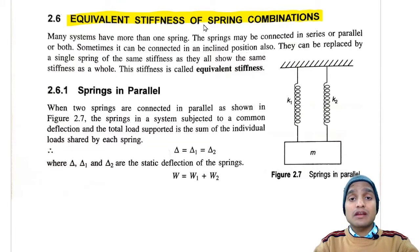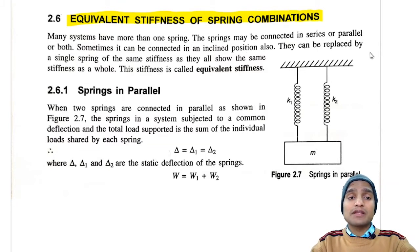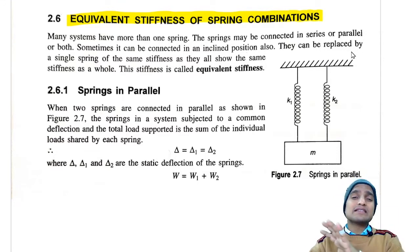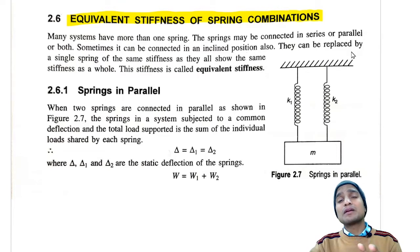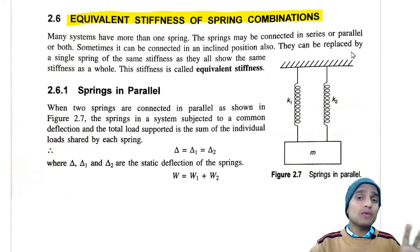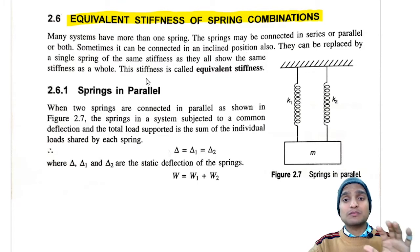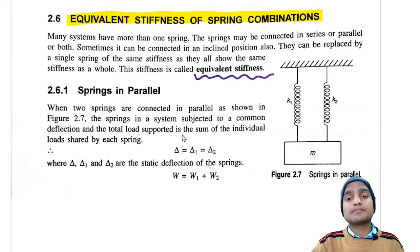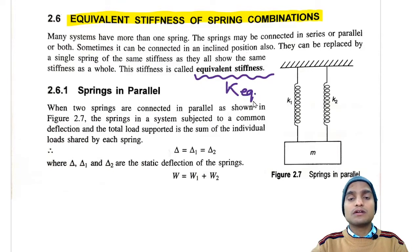Sometimes springs can also be connected in an inclined position. In that case, the entire spring combination can be replaced by a single spring having the same equivalent stiffness as the whole combination. That stiffness is called equivalent stiffness and is represented as K_EQ, where EQ is a subscript.